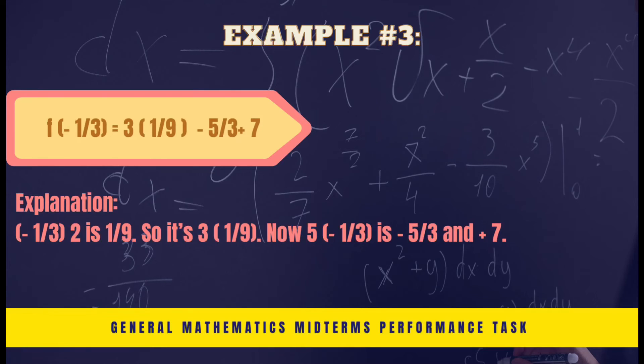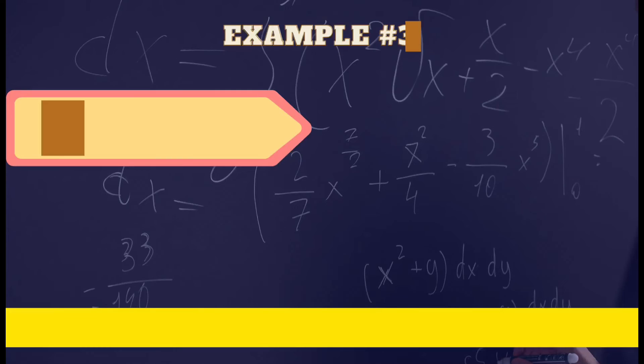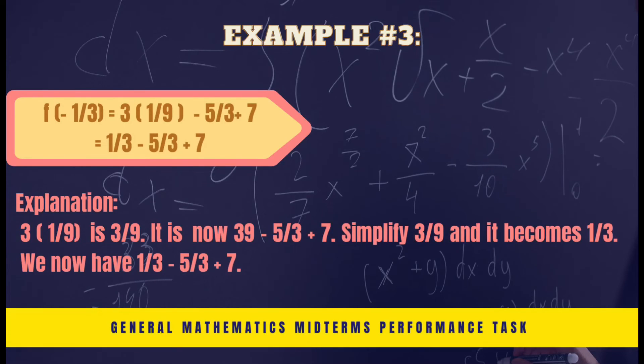So it's 3 times 1/9. Now 5 times negative 1/3 is negative 5/3, plus 7. 3 multiplied by 1/9 is 1/3. It is now 1/3 minus 5/3 plus 7.